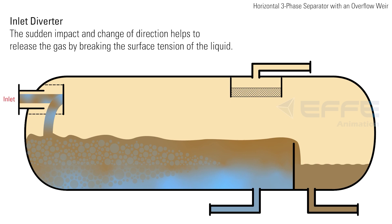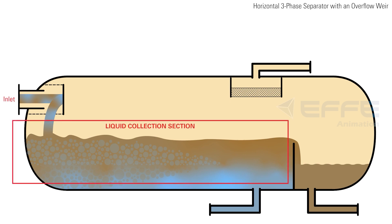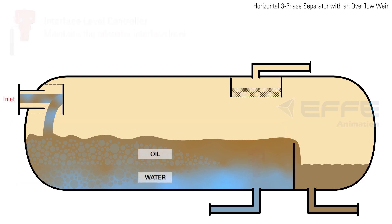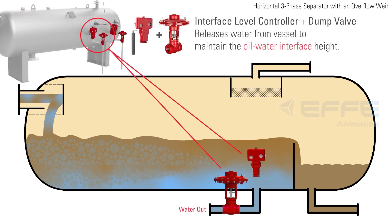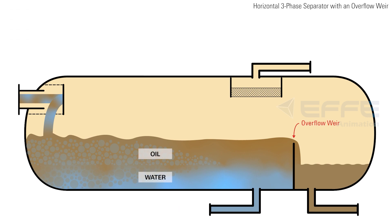By breaking the surface tension of the liquid, in the liquid collection section of the vessel, the oil separates and forms a layer above the water. An interface level controller maintains the oil-water level. This controller signals a dump valve to release water from the vessel as needed to maintain the oil-water interface height.